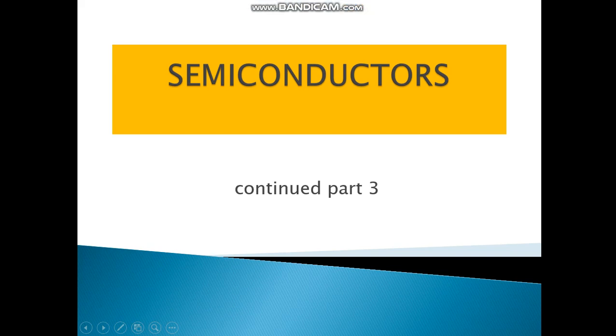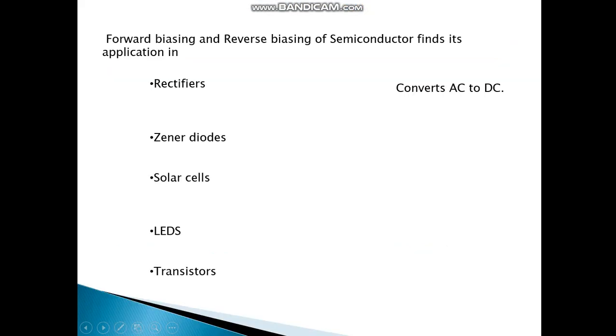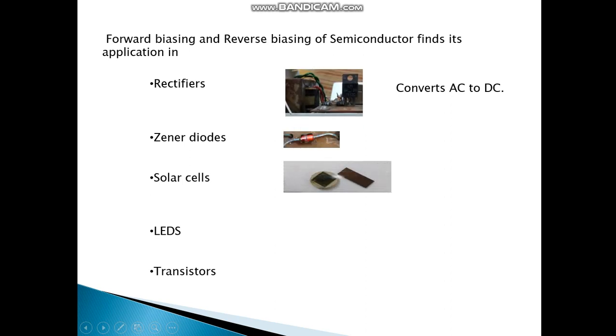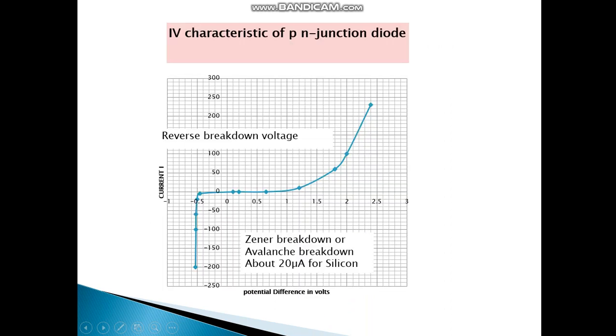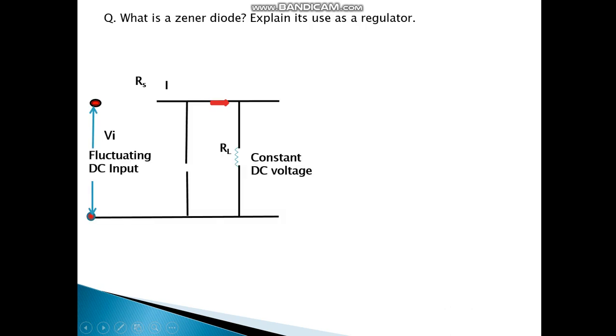So let us continue with semiconductors part 3. We have done forward bias, reverse biasing, we have done rectifier which converts AC to DC. That's our IV characteristic. Now let us see what is Zener diode. Explain its use as a regulator.